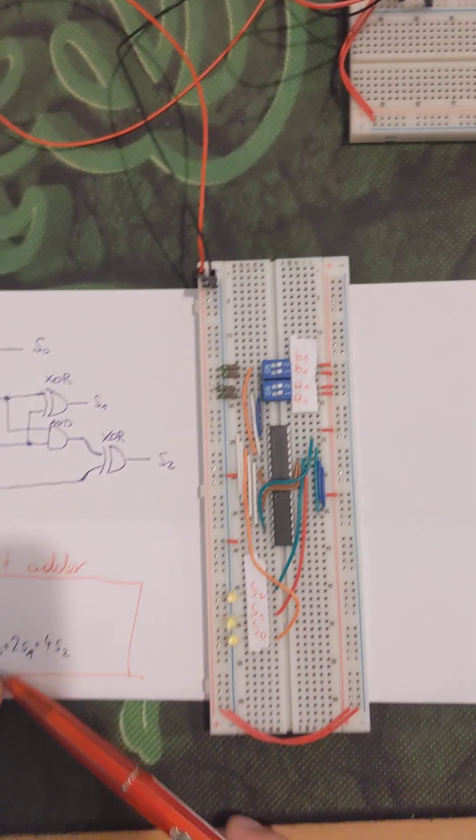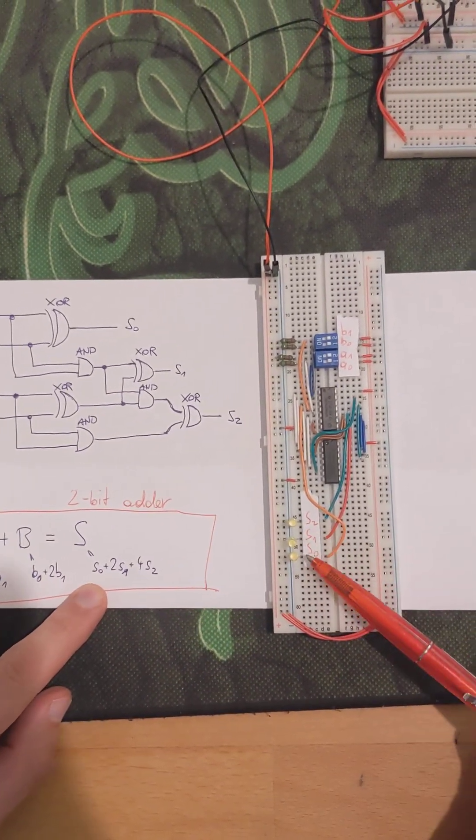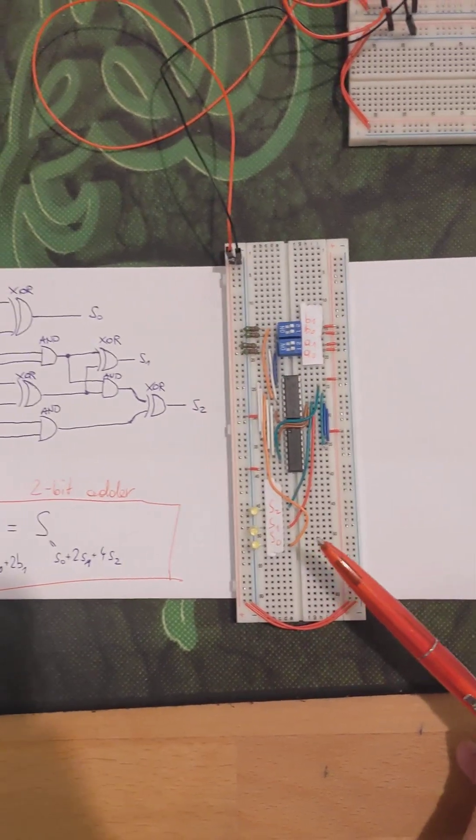And the output S0, S1, S2 will be shown by the LEDs here. Let's look at one example.